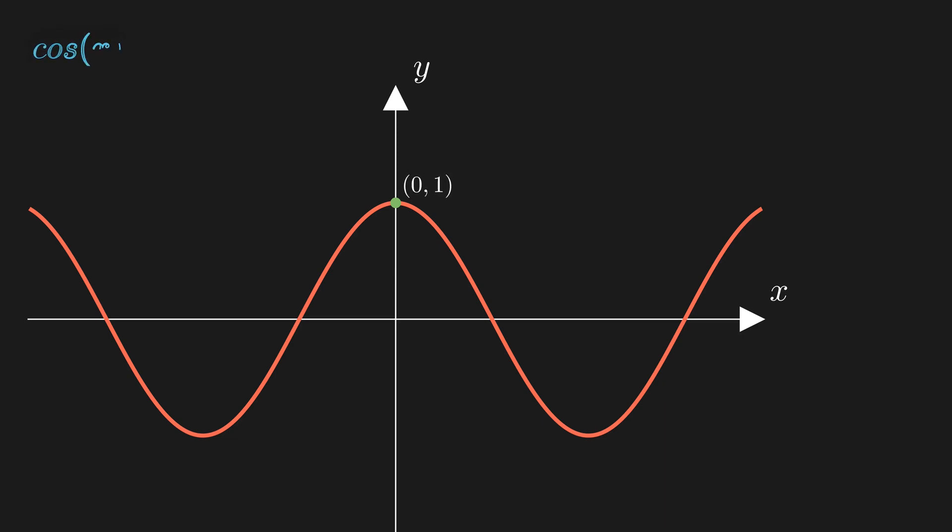The derivatives of the cosine function are also easy to find. The derivative of cosine is negative sine. The derivative of negative sine is negative cosine. The derivative of that is sine, and then it repeats again and again. And the values of these derivatives at x equals 0 follow a very neat pattern, and they're easy to compute.